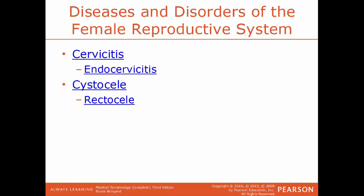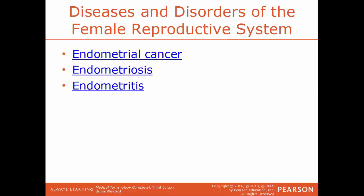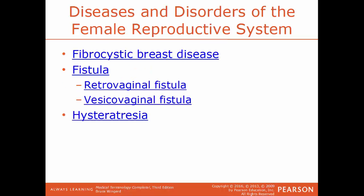Cystocele is a bulge of the bladder into the vagina. Rectocele is a herniation of the front wall of the rectum into the vagina. Endometrial cancer is cancer of the endometrium — the innermost lining of the uterus. Endometriosis is a condition where endometrial tissue appears outside of the uterus, causing a great amount of pelvic pain. Endometritis is the inflammation of the endometrium. Fibrocystic breast disease is a benign condition where the woman has painful lumps in the breast.